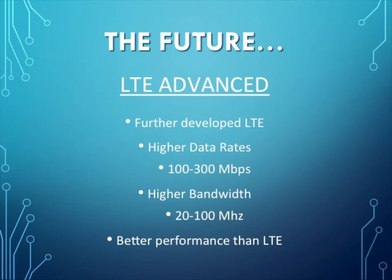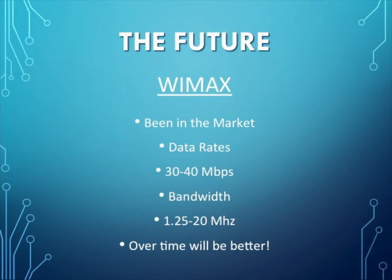After seeing the good and bad of 4G LTE, we are going to look into the future of the technology. The newly developed version of LTE is LTE-A, or LTE Advanced. It contains higher data rates, going as high as 300 megabytes per second, and a larger bandwidth of 20 to 100 megahertz, causing LTE Advanced to perform better than LTE. Another technology researchers say will pass LTE is WiMAX, its closest competition. WiMAX has been in the market longer than 4G LTE and is considered a 3G network. Its data rates are only 30 to 40 megabytes per second, and its bandwidth is 1.25 to 20 megahertz, but it still hasn't reached its full potential and should become stronger than 4G LTE over time.